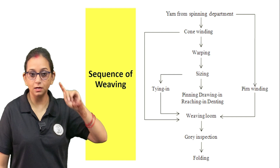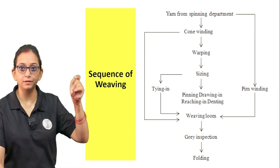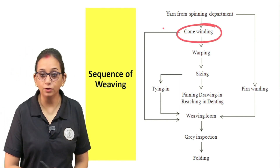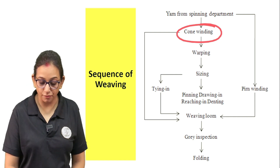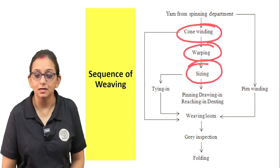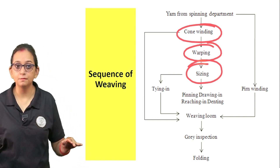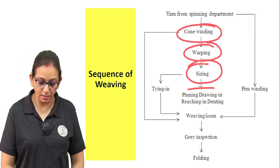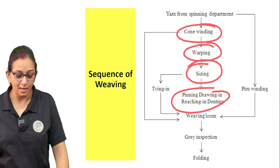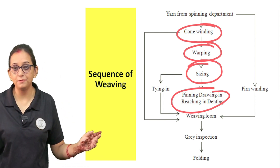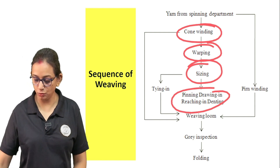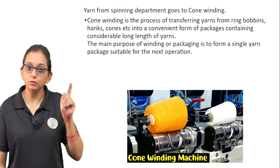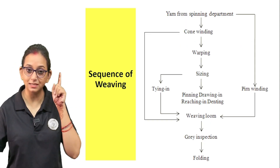Now let's talk about the sequence of weaving. Yarn from the spinning department — remember when we were talking about the processing of natural fibers and synthetic fibers, the last step was spinning. Yarn from the spinning department is first cone-wound, then warping is done, then it is sized, then it is drawn in, then put on the weaving loom, then inspected, folded, and sent to wherever it is needed.